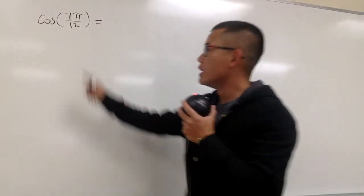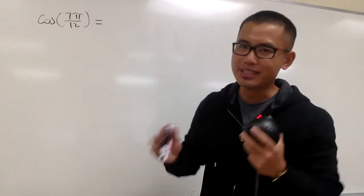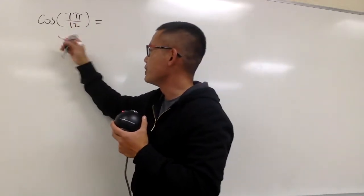Okay, we're going to figure out the exact value for cosine of 7π over 12. You know, degrees are much better to work with, right? So let's go ahead and change this into degrees.